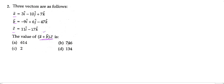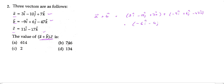First, let us find a + b. We have vector a (which contains 10j + 7k) plus vector b (which is −9i + 6j − 47k). Adding the coefficients: i gives 3 − 9 = −6i, j gives −10 + 6 = −4j, and k gives 7 − 47 = −40k. So a + b = −6i − 4j − 40k.